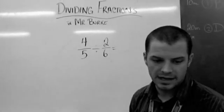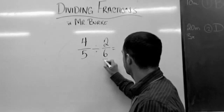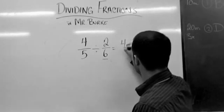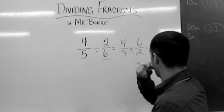So you've tried this question. Let's see how you did. Invert and multiply means you take this fraction and you flip it. So the question now becomes 4 over 5 times 6 over 2.